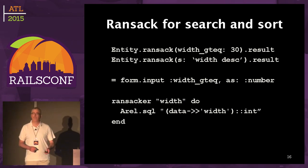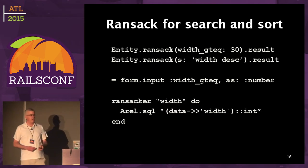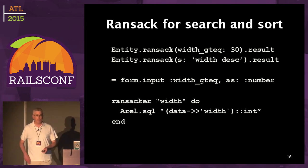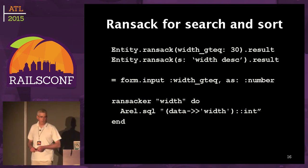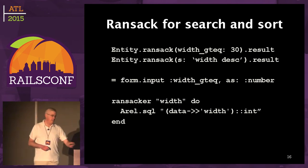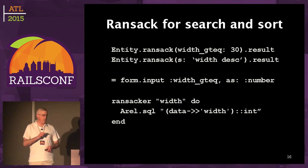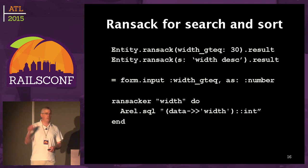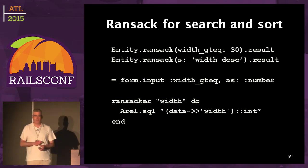I found that you could do it with a custom Ransacker. It's basically saying: if you see 'width' on my entity model, then when you make a query out of it, change the word 'width' to 'data->width::int'. This tells Postgres: look for the width key in the data — it's going to come back as text — and then convert it to an integer so you can compare it to the integer I gave you.